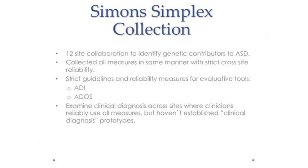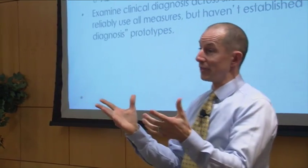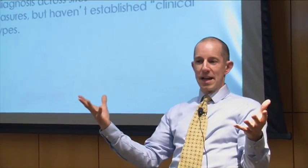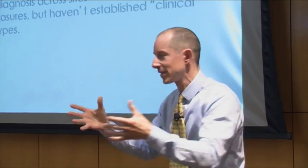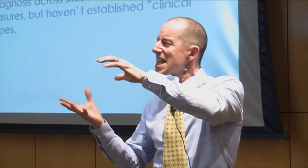This stems from work we did with the Simons Simplex Collection — a collaboration funded by the Simons Foundation to focus on gene discovery, specifically looking for particular types of genetic events in families where there's only one child diagnosed with autism. What we were able to do across 12 sites around North America was work together collaboratively, doing exactly the same data collection processes so we could end up with a large number of families with clear characterization done the same way. Prior to that, great work was going on at sites like University of Washington, Yale, and Vanderbilt, but everyone was doing something a little differently.